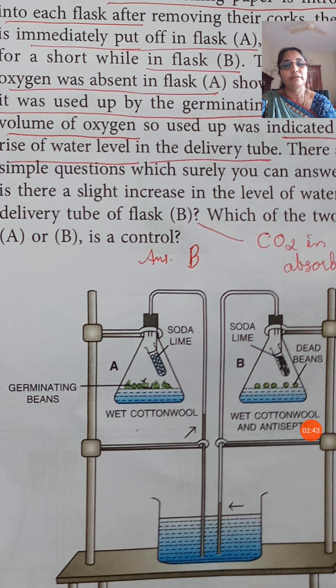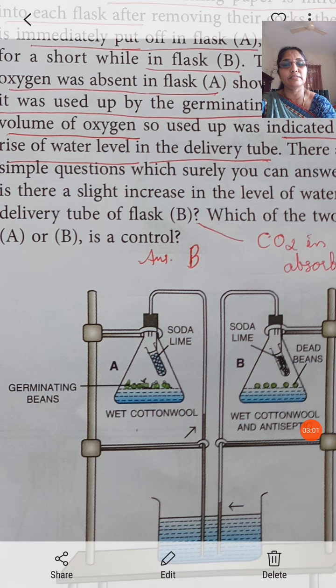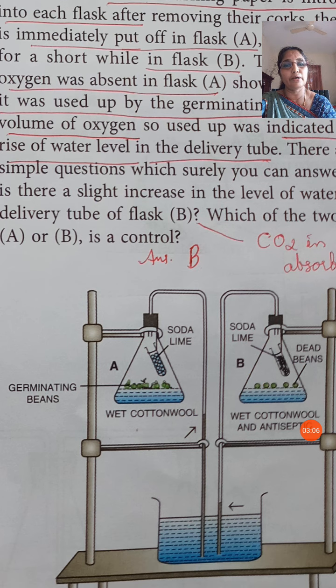This shows that a vacuum is created inside flask A. How is that vacuum created? The soda lime absorbs the carbon dioxide that is produced by the germinating seed, and germinating seeds are absorbing the oxygen present in the flask.